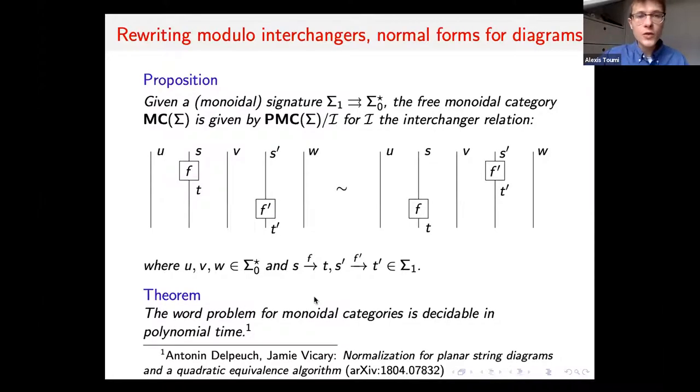To define the free monoidal category, we take this free pre-monoidal category and quotient it with the interchanger relation. Whenever we have two boxes in our diagram which are not connected, we can interchange them. This completely characterizes the free monoidal category and the associated word problem. The word problem for monoidal categories is decidable in polynomial time.